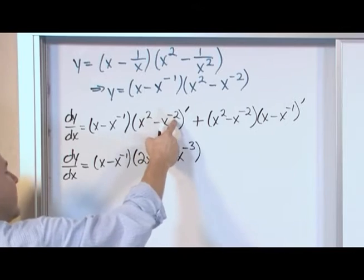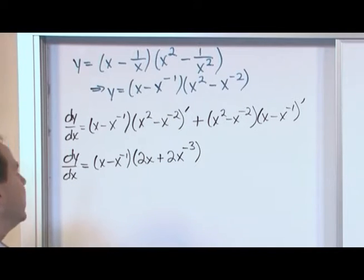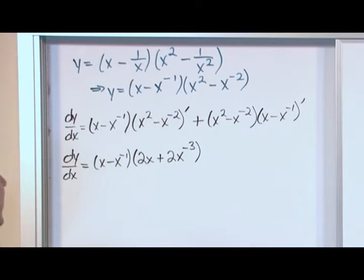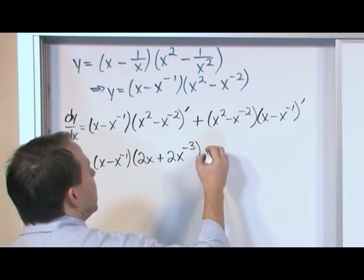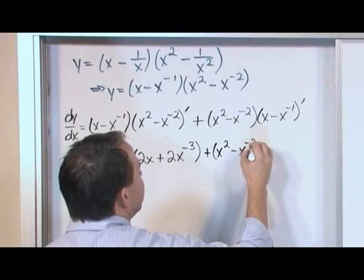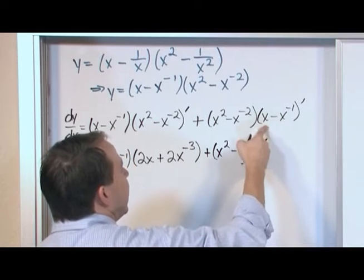2x to the negative 3 power. The reason it's negative 3 is because I subtract 1 off that exponent. Negative 2 minus 1 is negative 3. The reason it's positive is because these guys multiply one another. Plus, leave this alone, x squared minus x to the negative 2. And here I take the derivative.